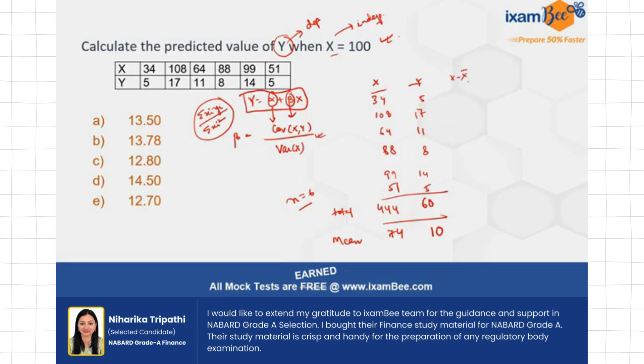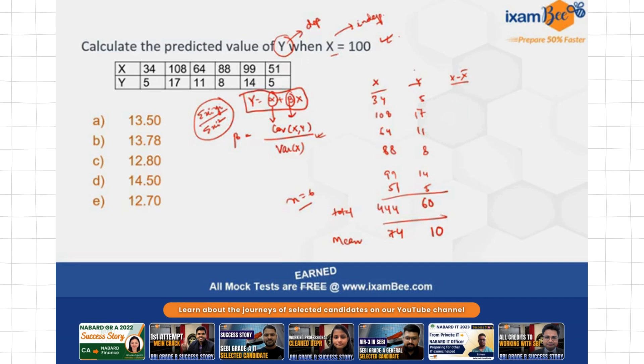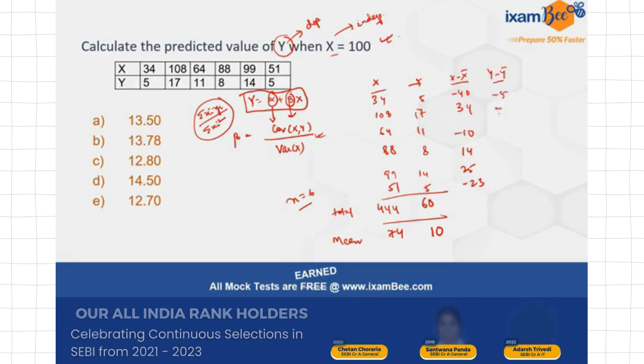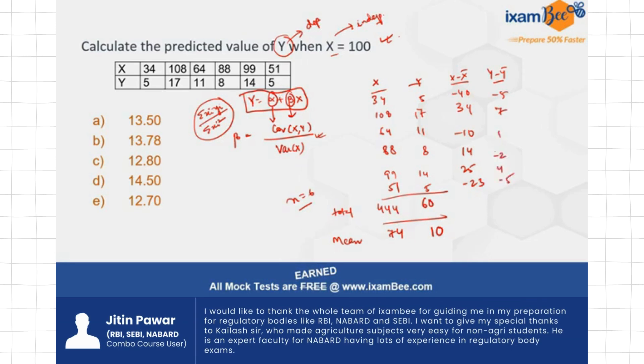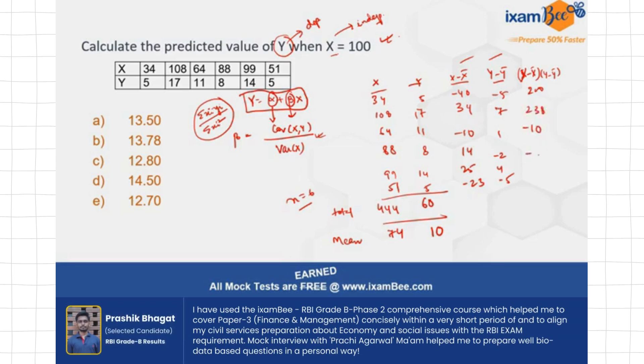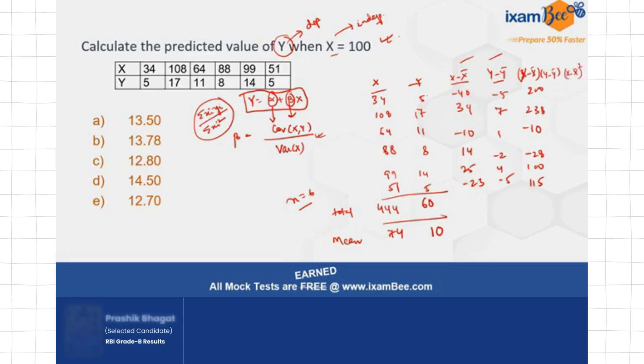Now x minus x bar that you need to calculate, which is going to be x bar is your 74. So subtract from each of these values, you will get minus 40, 34, minus 10, 14, 25 and minus 23. Similarly, you find out y minus y bar, you will get minus 5, 7, 1, minus 2, 4 and minus 5. These are the values that you are going to get. Now you find out the product of these two, find out the product of x minus x bar into y minus y bar. These two columns, you multiply them. So you will get 200, 238, minus 10 here, minus 28 and 100 and 150. Then you do also need to find out x minus x bar whole square for the denominator, the variance.